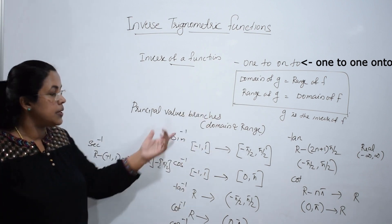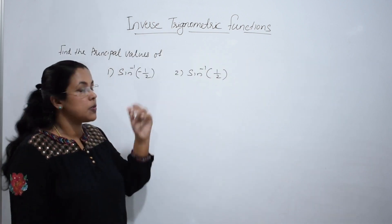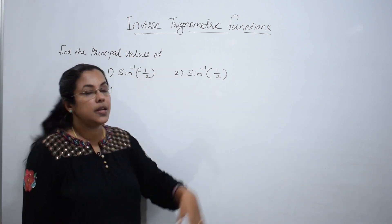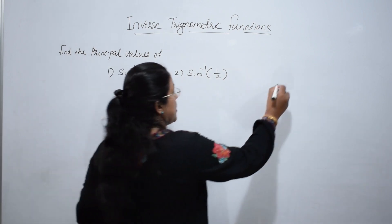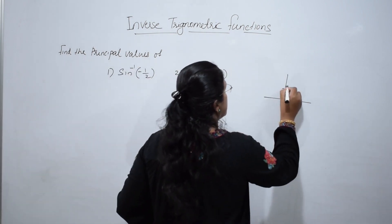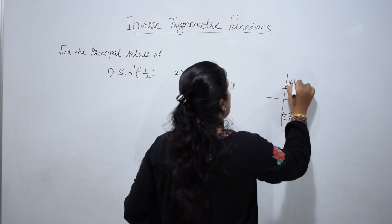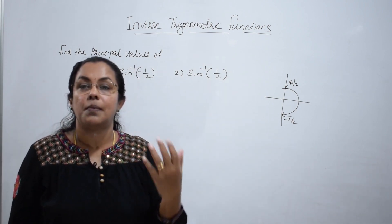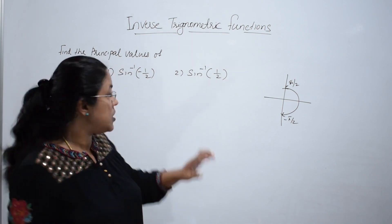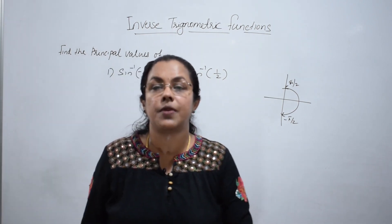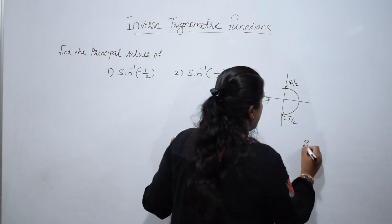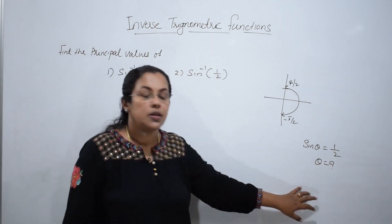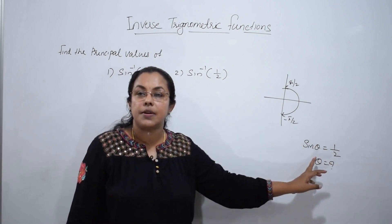You must remember all the principal value branches. We will solve some questions. Find the principal values of sine inverse of minus half and sine inverse of half. We know the principal branch of sine is from minus pi by 2 to pi by 2. We have to find the angle which corresponds to minus 1 by 2 for sine.